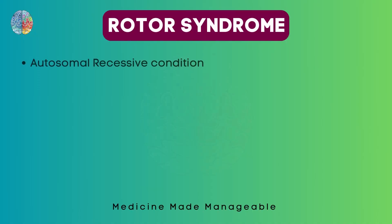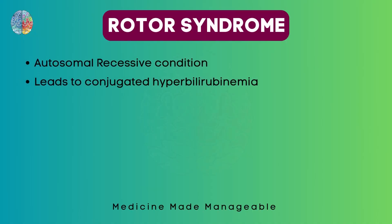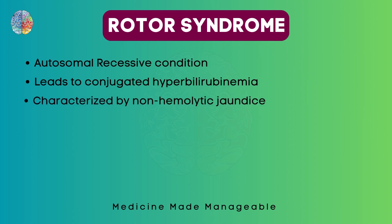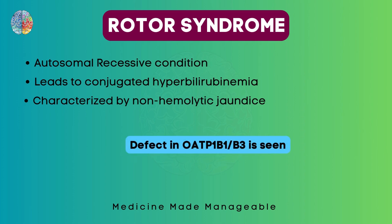Rotor syndrome is an autosomal recessive condition which leads to conjugated hyperbilirubinemia, meaning there is an excess amount of conjugated bilirubin in the blood. It is characterized by non-hemolytic jaundice, and the most important point is that a defect in OATP1B1 or OATP1B3 is seen.